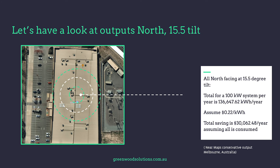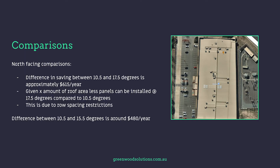For north-facing at a slightly higher tilt of 15.5 degrees, the total for a 100 kilowatt system increases to 136,674 kilowatt hours per year, giving total savings of $30,062. At 17.5 degrees, the total saving increases to $30,205 per year. The difference in saving between 10.5 and 17.5 degrees is approximately $615 a year, and between 10.5 and 15.5 degrees is around $480 a year.